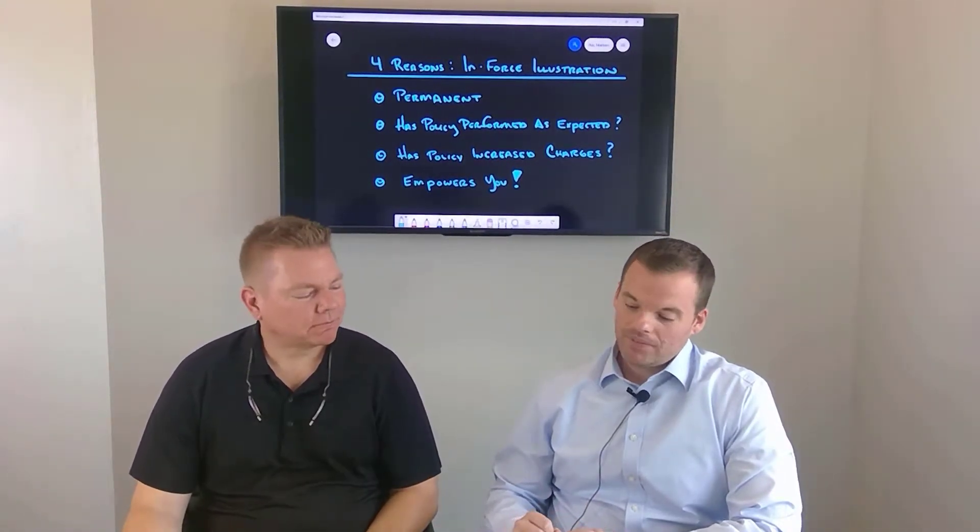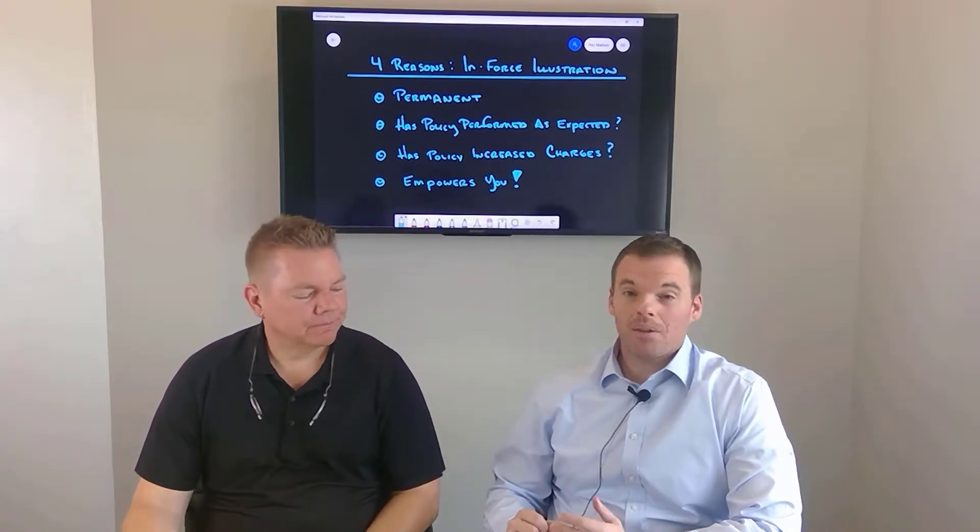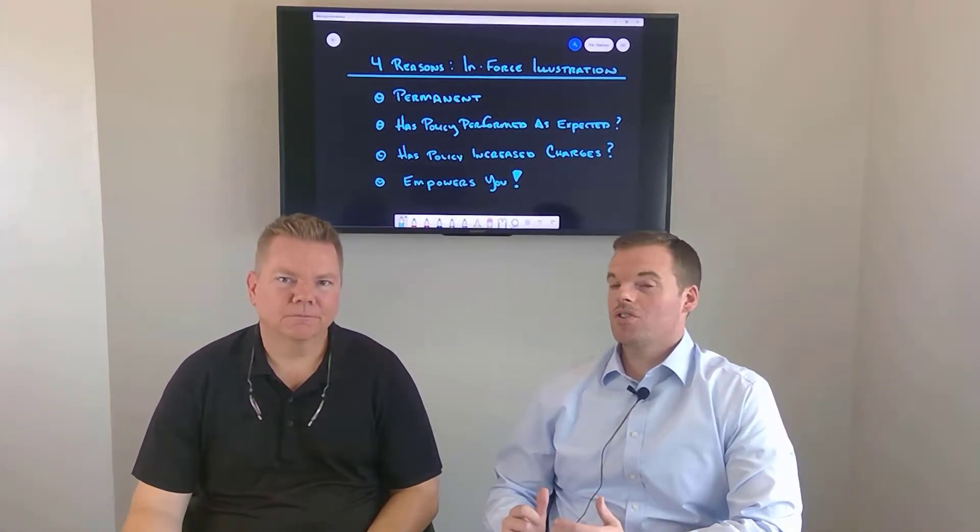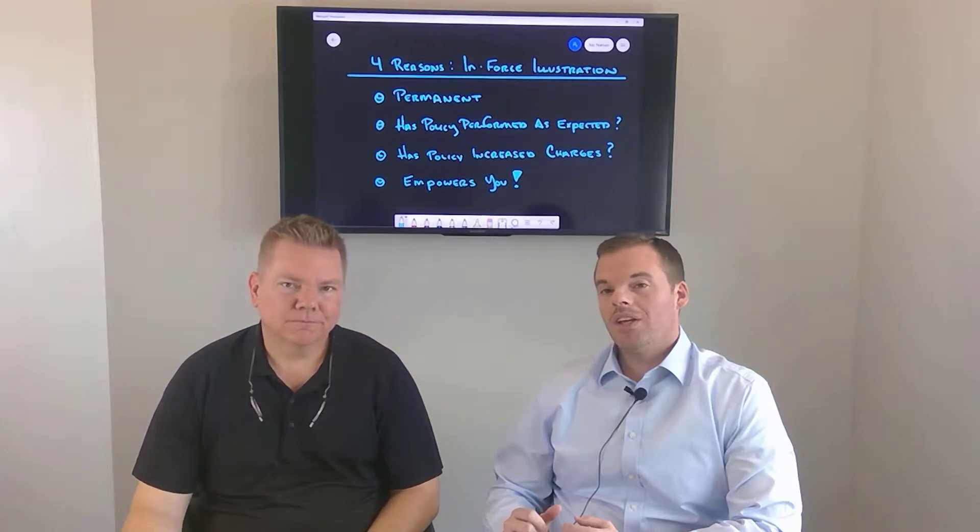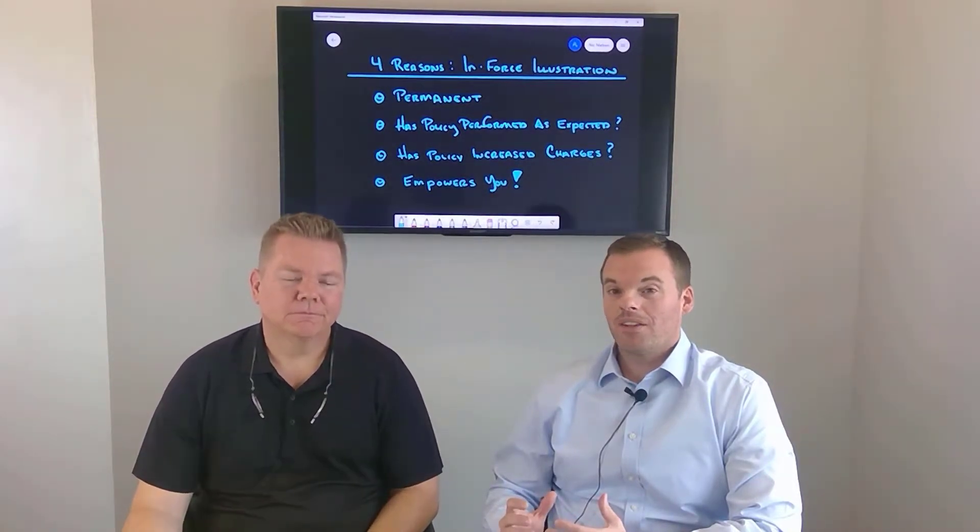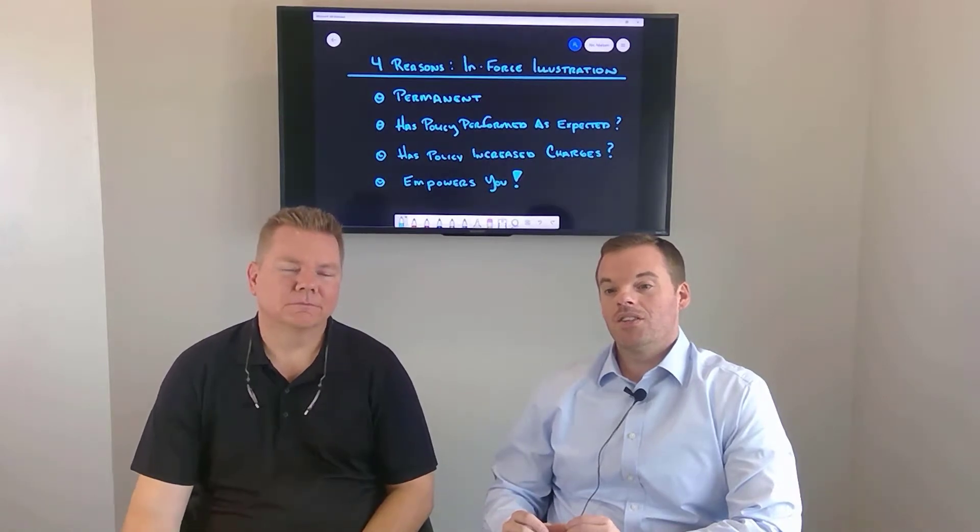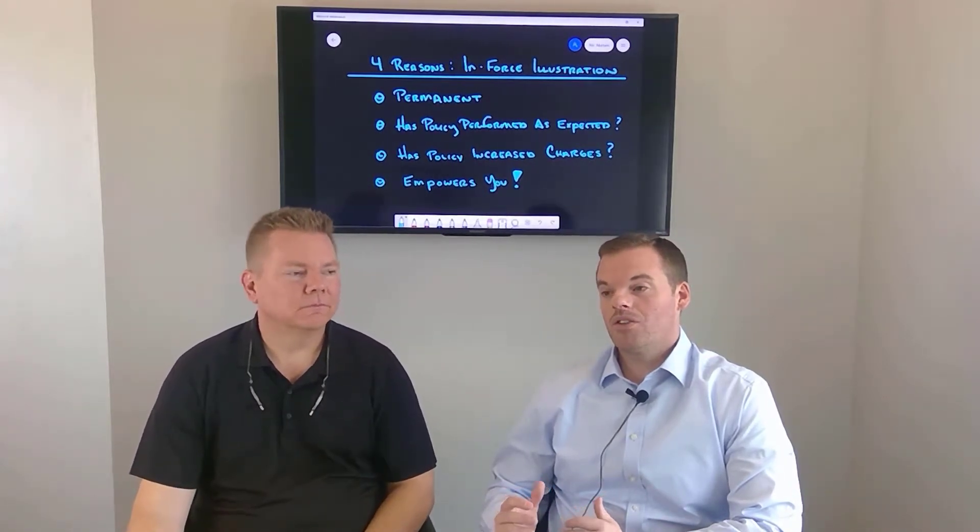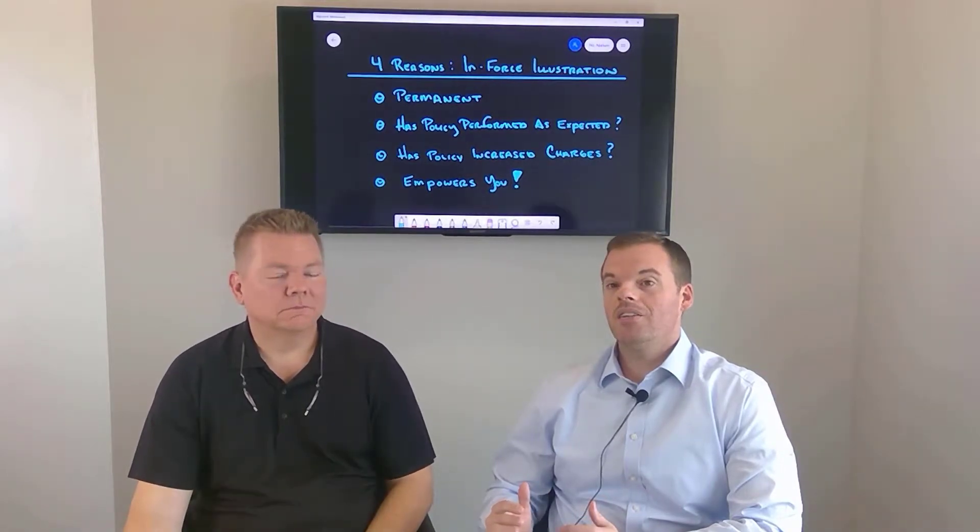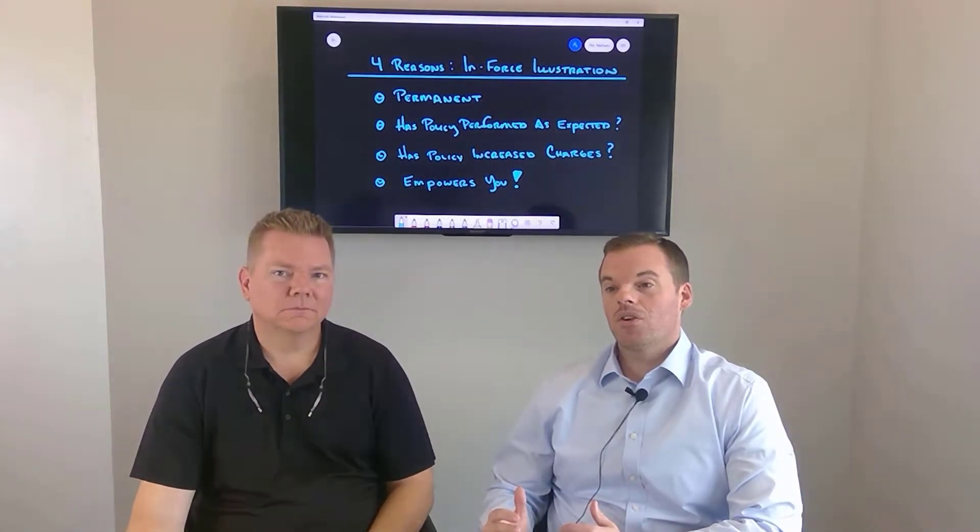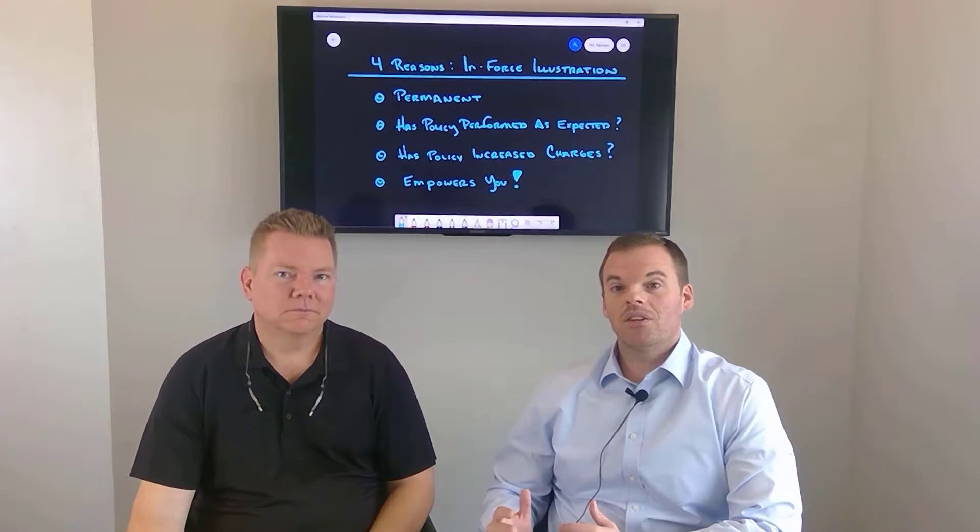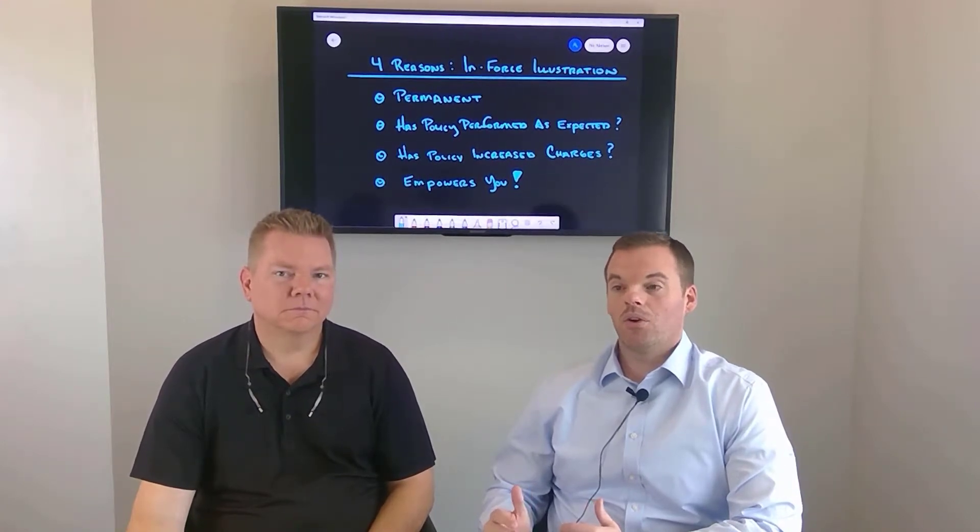The third reason is that the policy could have increased charges. So when we get these illustrations back, this is really a look under the hood of the insurance policy. There's two columns. One is the current charges and then one is the guaranteed charges. And so those can be drastically different. They might have slowly increased your charges over time.